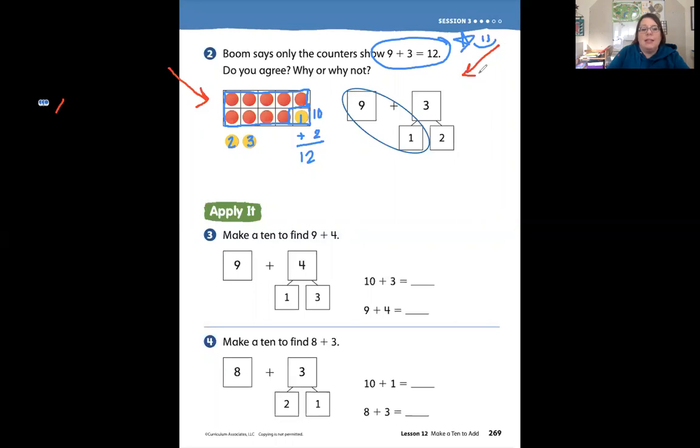So nine plus three does equal twelve. That is correct. But over here we're going to look at this problem this way to solve. Here we have nine plus three. If we have three, we know that we want to count on to make a group of ten. So I'm taking one of these counters and adding it to the nine to make a group of ten. I don't have three anymore, I only have two left. Ten plus two equals twelve.